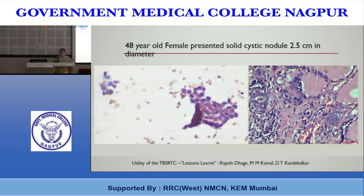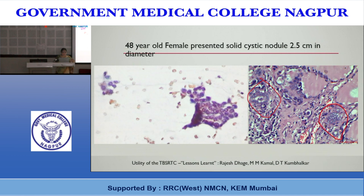A smear from a 48-year-old female with a solid-cystic nodule 2.5 cm in diameter showed mild atypia with nuclear clearing in most cells, rolled edges, and central pale areas. We reported this as suspicious for papillary thyroid carcinoma; however, histopathology showed multinodular goiter. Excessive reliance on one feature may lead to false positive results. Alternatively, such features may also turn out to be PTC — so if you are not sure, place the cells in the AUS category to retain the option of repeating FNAC.